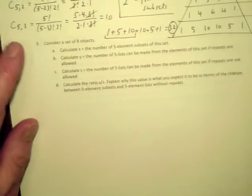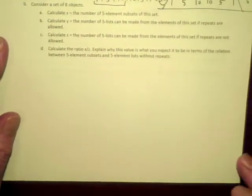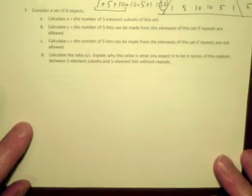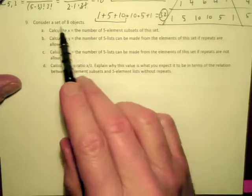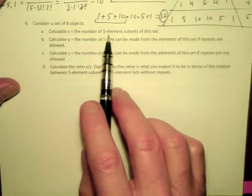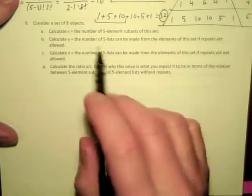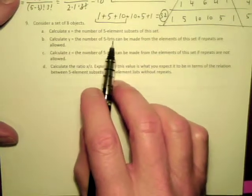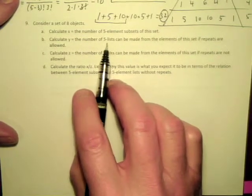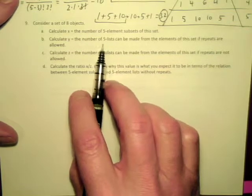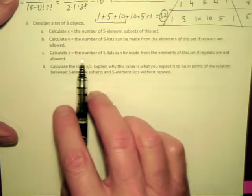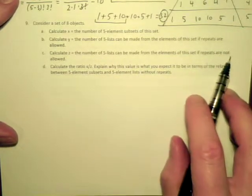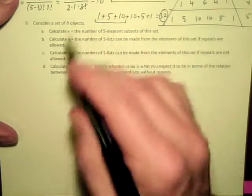Okay, let's move on. Here we're on midterm number 3 review sheet, and I am on problem number 9 now. It says consider a set of 8 objects, and we're going to calculate x as the number of 5 element subsets, then calculate y as the number of 5 lists, which means lists of length 5 when repeats are allowed. The quantity z is going to be the number of 5 lists when repeats are not allowed.